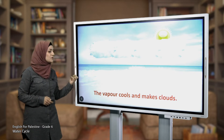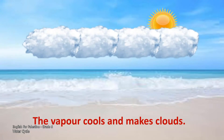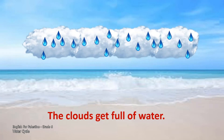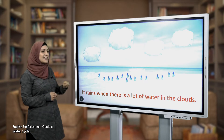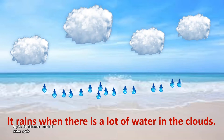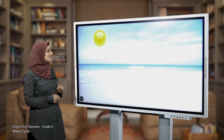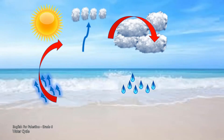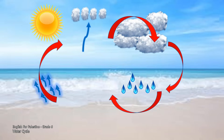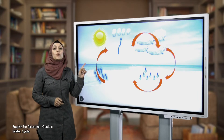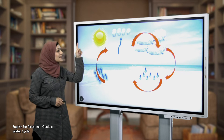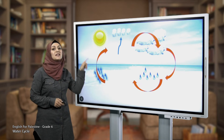Then the hot vapor rises in the sky. When the vapor cools as it rises up, it makes clouds. Then the clouds get full of water, and then it rains. This is what we call the water cycle. Look at the picture — we call it a cycle because it keeps happening again and again, many times.